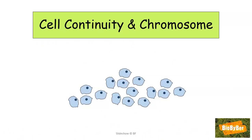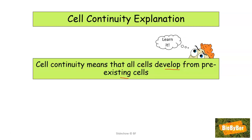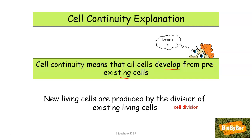Let's look at cell continuity and the chromosome. Cell continuity means that all cells develop or come from cells that were there already — from pre-existing cells. Cell continuity really refers to the fact that living cells come from living cells of the same type.